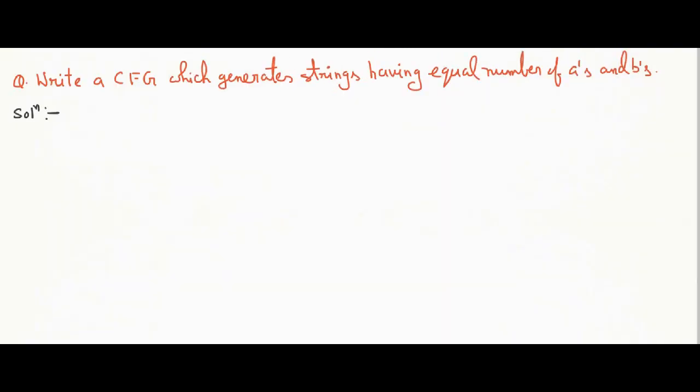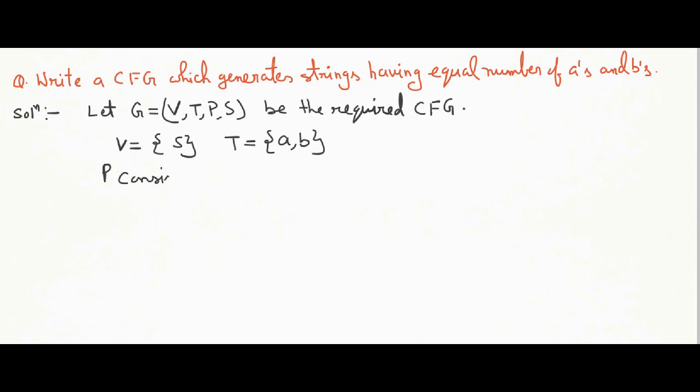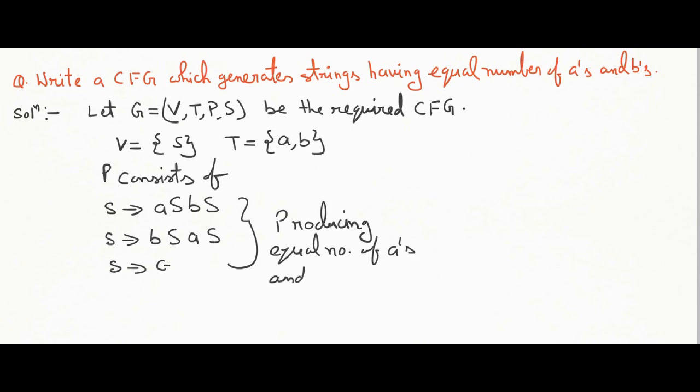Equal number of A's and B's. Construct G equals V, T, P, S. V equals S, T equals A, B. Production rules are. Just take an example. Producing equal number of A's and B's. These productions.